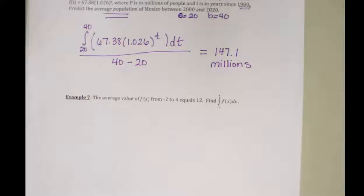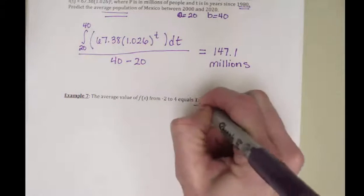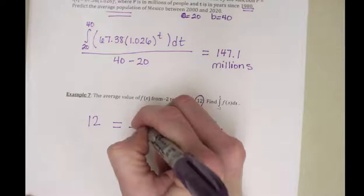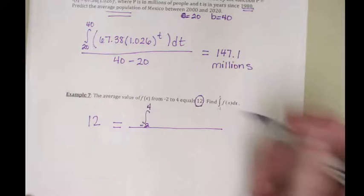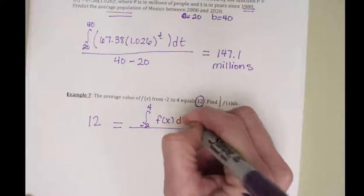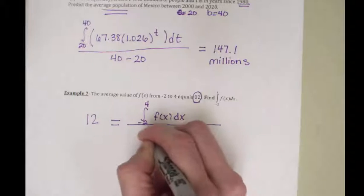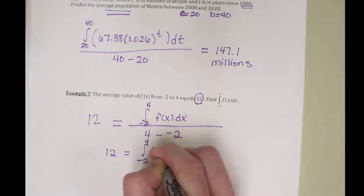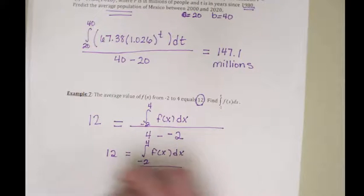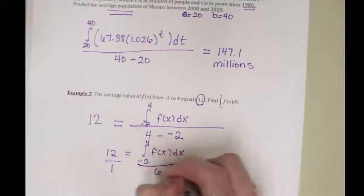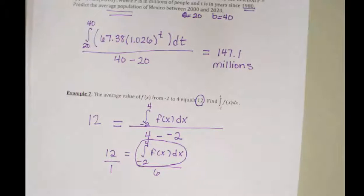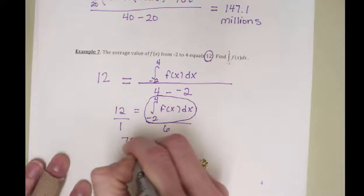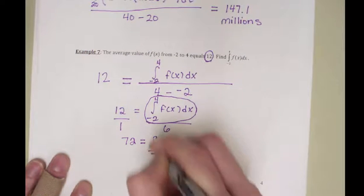In number 7, they want us to work backwards. They're telling us the average value is 12, so this whole division setup equals 12. We want to find the integral — that goes on top. We don't know f of x so we can't use the calculator, but on the bottom we do b minus a. So we get 12 equals the integral from negative 2 to 4 of f of x dx, over 6. Think of solving it like any proportion — cross multiply: 12 times 6 is 72, and 1 times the integral is just the integral. So the integral equals 72.